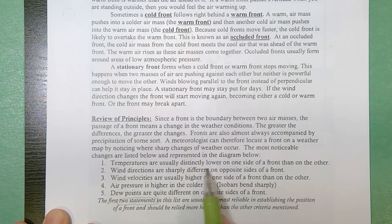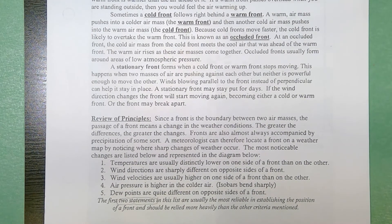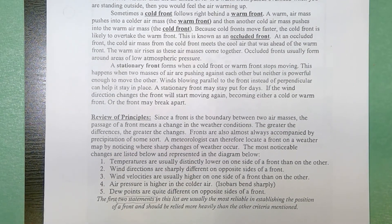So temperatures are usually much lower on one side of the front than the other. The wind directions are sharply different. So if I've got a front that separates air masses, I should be getting distinctly different characteristics on opposite sides of my front.